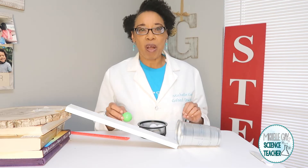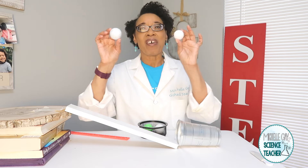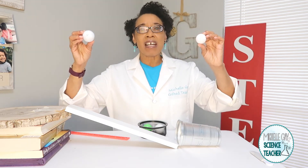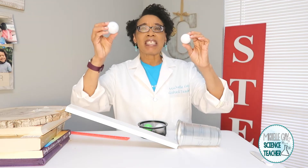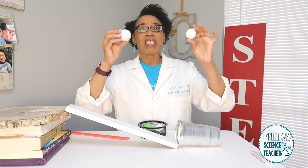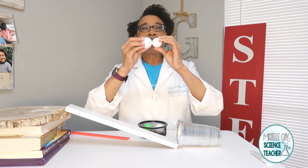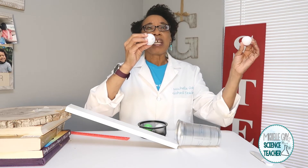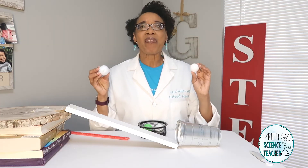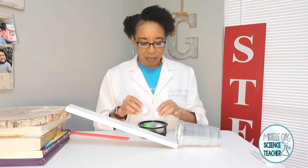If you've seen football players on the field — imagine two football players running down the field, and there's a tackle. When one player is coming and running as fast as he can, he has a lot of energy. They collide. But which one moves back? Which one gets the harder hit? Think about that as we go through our explorations today with our balls.